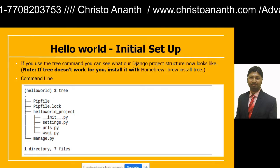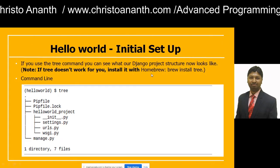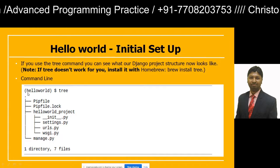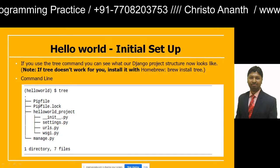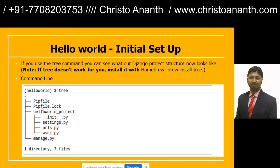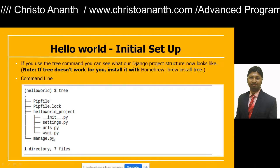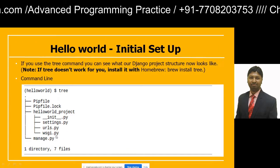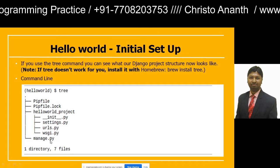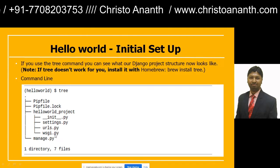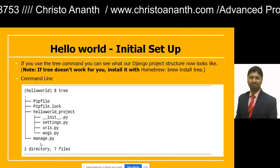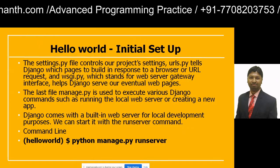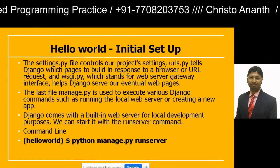Using the tree command — brew install tree on Mac — you can see the tree structure of the hello_world app. Running dollar tree shows: a Pipfile, Pipfile.lock, and the hello_world_project directory containing four files: __init__.py, settings.py, urls.py, and wsgi.py. Finally there is manage.py. That's one directory with seven files — these are the pre-installed files that come with Django.